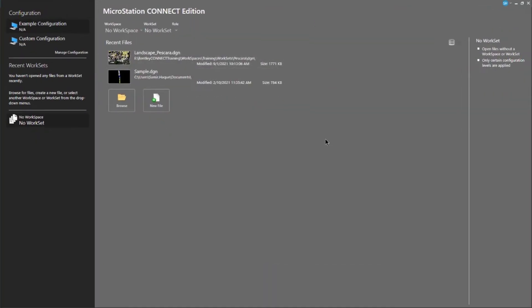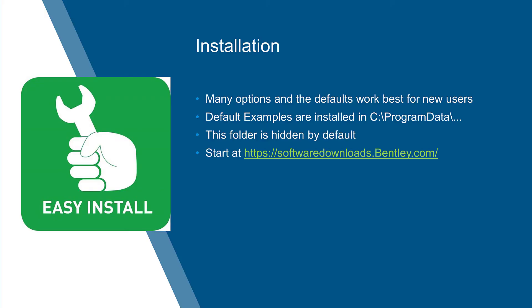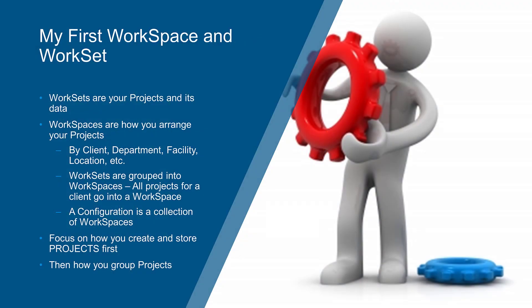Once MicroStation gets started, we can start talking a little bit about our CAD standards. So let's move on and take a look at what CAD standards mean and how we can get to them. We're talking really about setting things up, making your settings correct, and doing it through a process that we call workspaces and work sets.